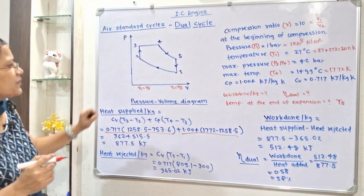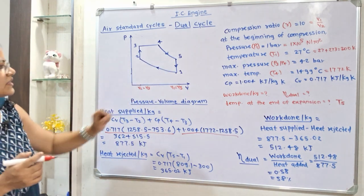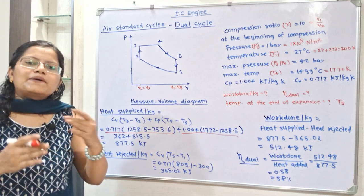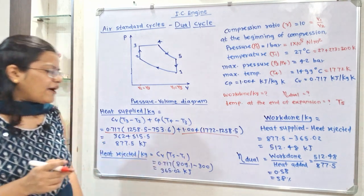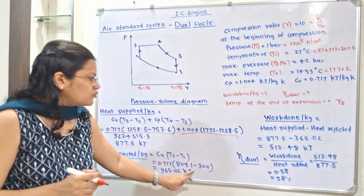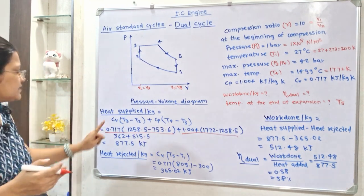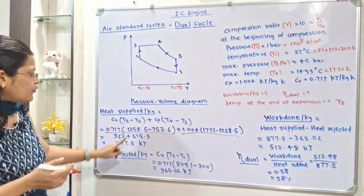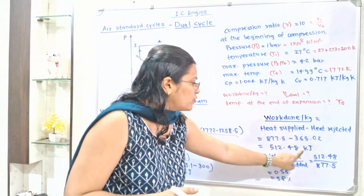Heat rejected per kilogram: heat is rejected during process 5 to 1 at constant volume. Qr = Cv(T5 − T1) = 0.717 × (809.1 − 300) = 365.02 kJ/kg. Work done per kilogram = heat supplied − heat rejected = 877.5 − 365.02 = 512.48 kJ/kg.